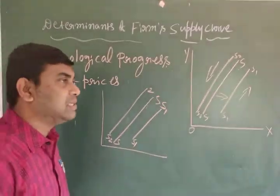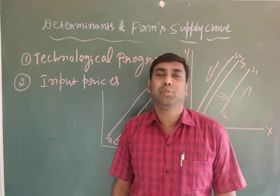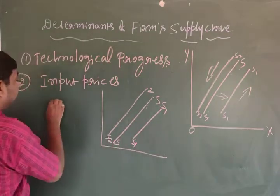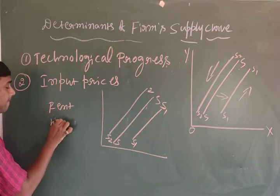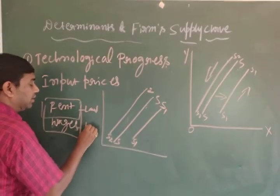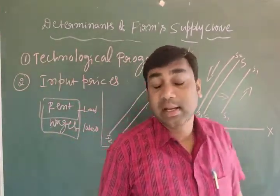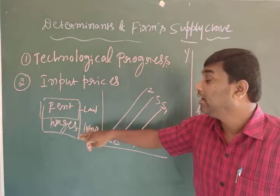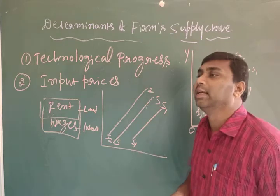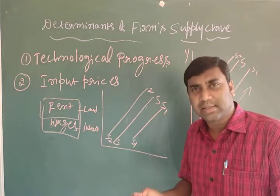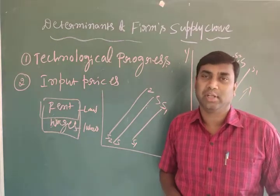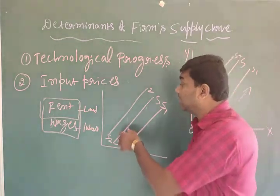Because of input prices — land, labor, capital — if we have to pay more rent for land and more wages to laborers, the cost of production will increase. Marginal cost and total cost both increase. This situation brings a loss to the producer, who will then stop production, causing supply to decrease and the supply curve to shift leftward.